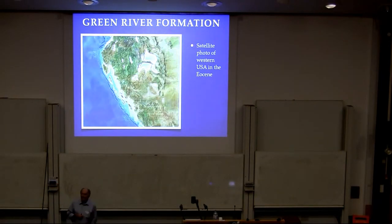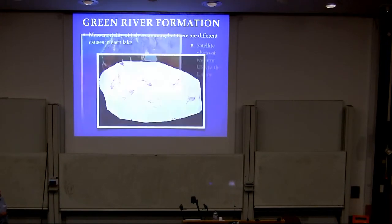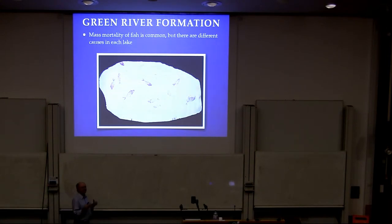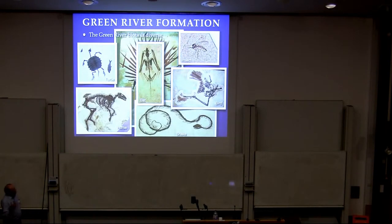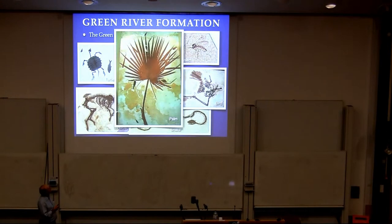You have to have an old satellite photo of the United States to show what it would have looked like. Well-known are fish, and you get fish mortalities, mass mortalities. Interestingly, the fish mortalities seem to have a different cause in each of the different lakes. Very interesting biota: some of the earliest bats, snakes, other things, nice plants.